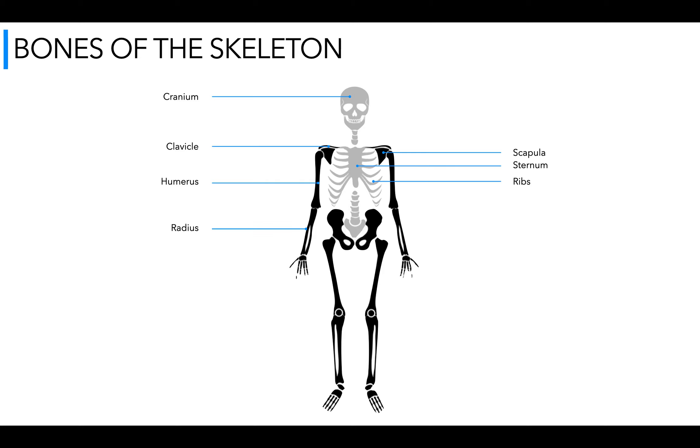We have the radius and the ulna. Some simple ways to remember that the radius is always on the thumb side or another way would be ulna for underneath. Moving on to the hand we have the carpals, the metacarpals and the small bones in the fingers are the phalanges. There are our phalanges.